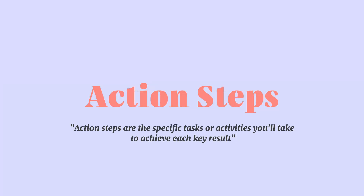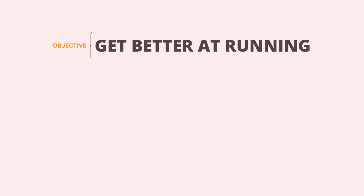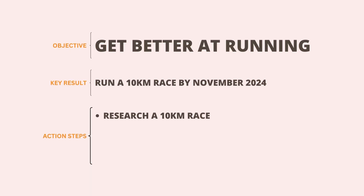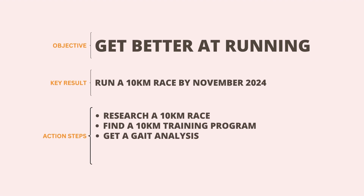Action steps help you actually achieve the key results, which then help you achieve the wider goal. For example, if my goal is to start running, a key result could be to run a 10 kilometer race by November 2024. The action steps underneath that would be: research a 10K race, find a training program, get a gait analysis for the right trainers, buy new trainers, and sign up to the race.